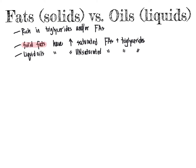Solid fats are predominantly present with saturated fatty acids and triglycerides. On the other hand, liquid oils have predominantly unsaturated fatty acids and triglycerides present in them, leading to a lower melting point.